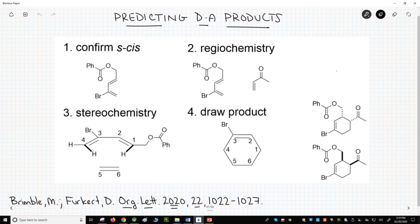Step 2: Regiochemistry. There are many methods for predicting regiochemistry. Here is mine. I find the strongest diene electron-donating group. It's the alkyl group. Give that group an imaginary negative charge because it's an EDG and alternate charges through the diene carbons.